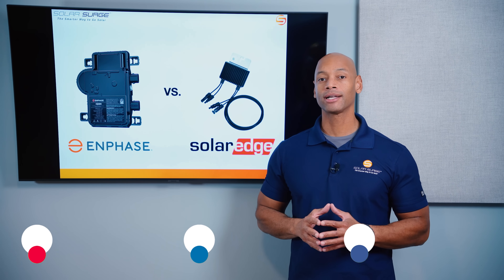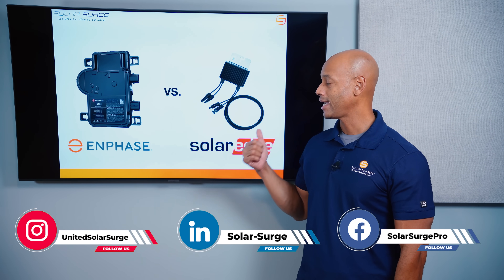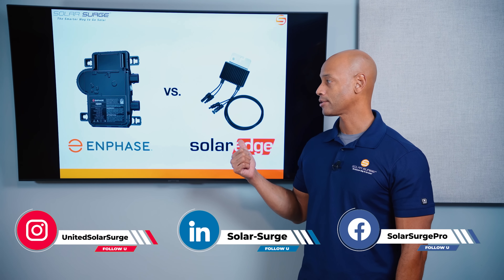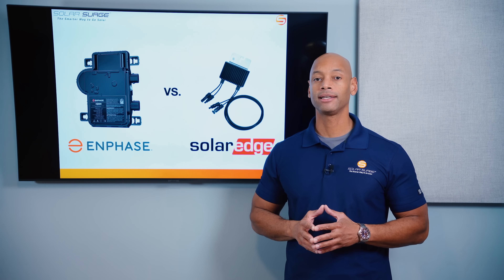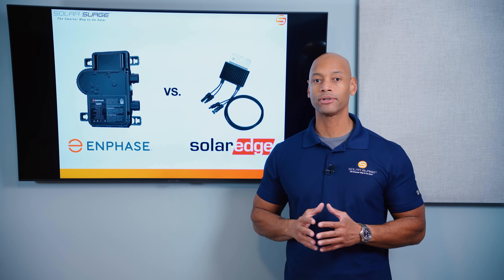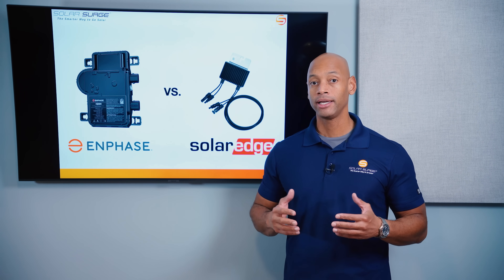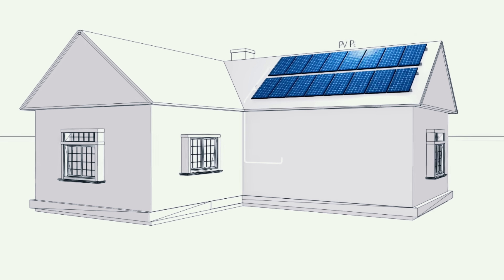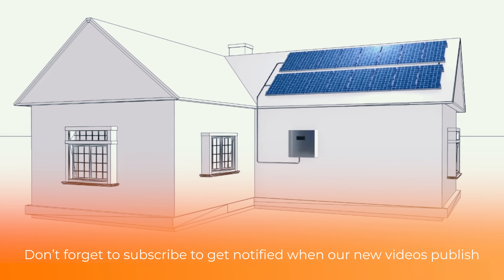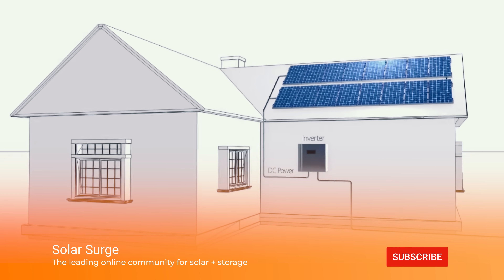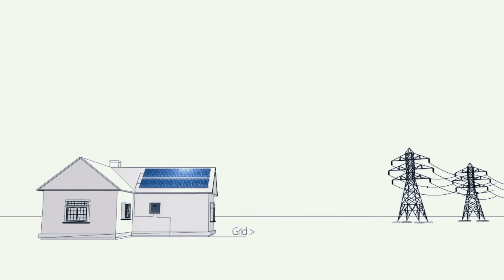In today's video, we're going to be talking about the differences between micro-inverter-based solar systems and DC-optimizer-based solar power systems. All solar power systems that are connected to the electric grid have to have some sort of an inverter. What the inverter does, very simply, is convert the DC or direct current electricity that natively comes off the solar panels into high-voltage alternating current electricity to match the electric grid.